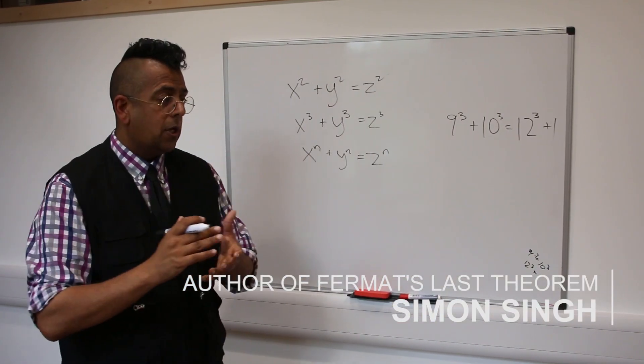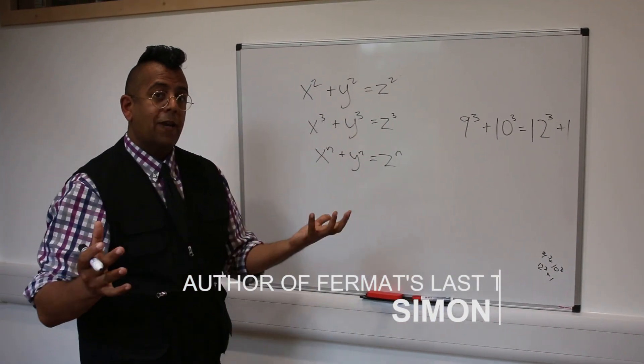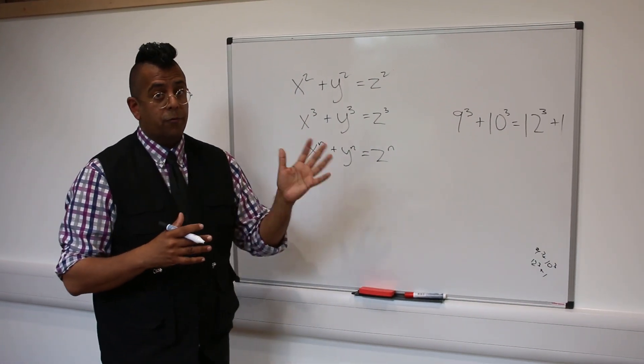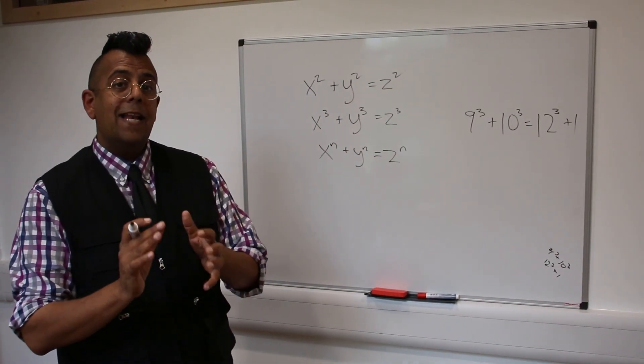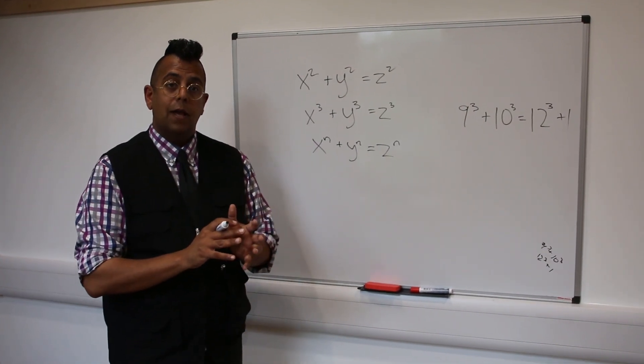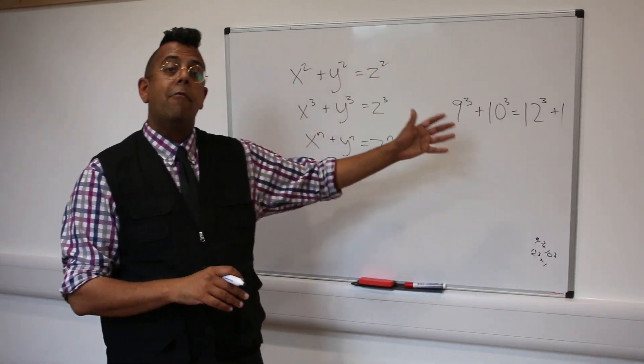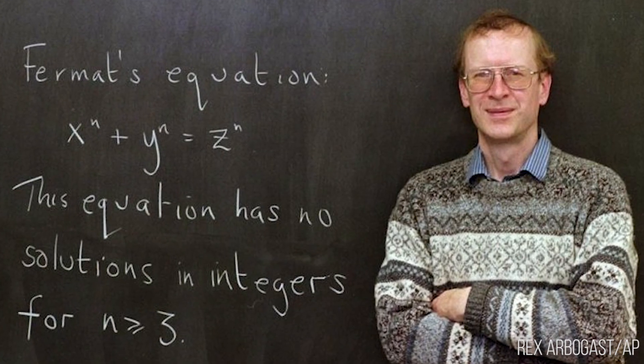An English mathematician came to Cambridge, stood up in front of a lecture theatre, gave three talks over the course of three days, and at the end of the last talk, and I think the audience had already got there by this stage, said, and here it is, I've proved Fermat's Last Theorem.